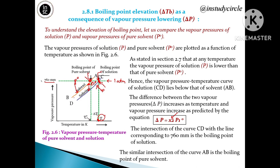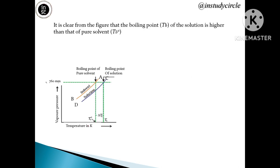Similarly, the vapor pressure curve AB of the pure solvent intersects the horizontal atmospheric pressure line (760 mmHg), and the temperature corresponding to that intersection is the boiling point of the pure solvent, denoted by T0b. The boiling point of the pure solvent is less than that of the solution containing the non-volatile solute — the boiling point of the solution is higher than T0b.